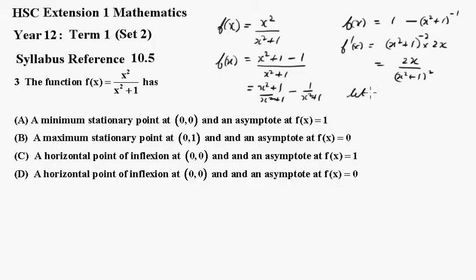Now, we'll let f dash x equal 0 to find the maximum. So, we have 2x over x squared plus 1 squared equals 0, which means that x must equal 0. And of course, putting that back in the original function, we get f(x) must also equal 0. So, the stationary point is (0, 0).